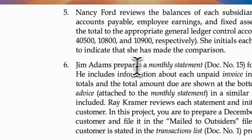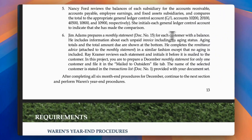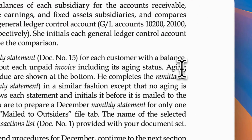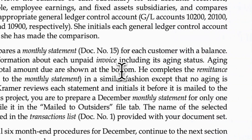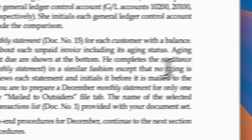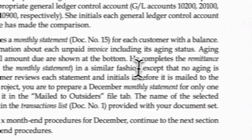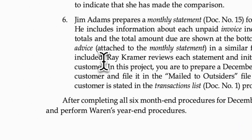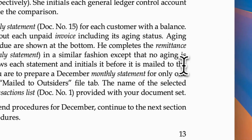On the sixth month-end procedure, Jim Adams prepares a monthly statement for each customer with a balance. He includes information about each unpaid invoice, including its aging status. Aging totals and the total amount due are shown at the bottom. He completes the remittance advice attached to the monthly statement in a similar fashion, except that no aging is included. Ray Kramer reviews each statement and initials it before it is mailed to the customer.